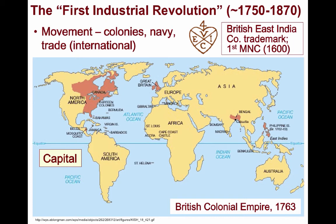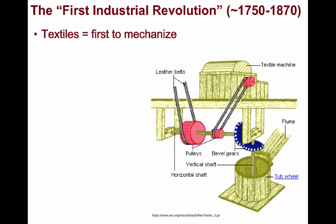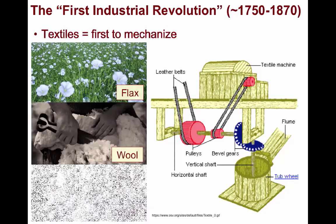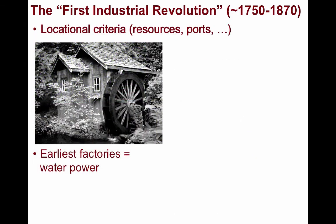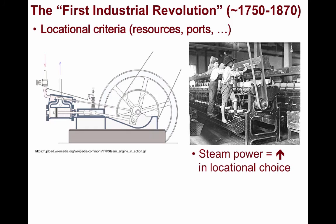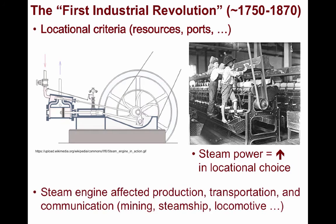The first industry to truly mechanize was the textile or cloth industry. This makes perfect sense in that through the Second Agricultural Revolution, more food and natural fibers were produced than ever before — major increases in the production of flax for linen, as well as wool and cotton. With such an overabundance of raw materials, the need to process them into thread and finished textiles was a logical progression. Locational criteria for industrializing included proximity to energy sources and raw materials. Since the earliest factories were powered through water wheels, they had to be adjacent to rivers. This changed with improvements in technology, as the steam engine enabled manufacturers greater choice in where they could locate their factories, affecting production, transportation, and communication.